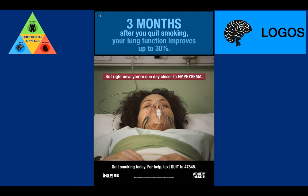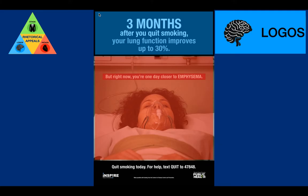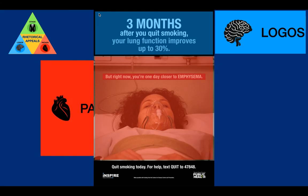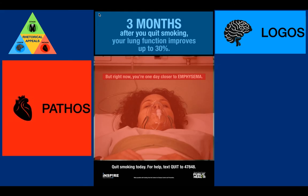Underneath this, we have an image — it's a woman lying in a hospital bed with breathing apparatus attached to her face. It actually kind of scares me. And if you look at the banner, it says: 'but right now you're one day closer to getting this smoking related illness.' It's talking directly to me, telling me that I could be the woman in the hospital bed. This scares me. It appeals to my emotions and thus makes me care about the advertisement. It's an example of pathos.